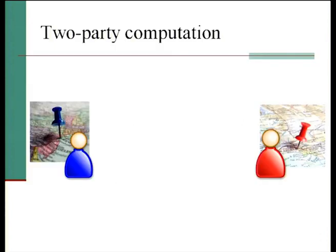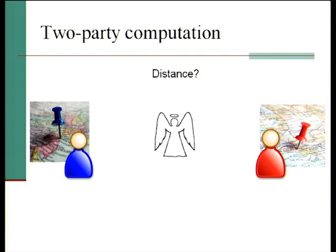The problem we're talking about here is two-party computation. The setting is two parties have private information — say their location — and they want to compute some function of that private information, for example how far apart they are. The ideal situation would be that they had some sort of trusted third party, where they could send their input and get back the answer to their function.